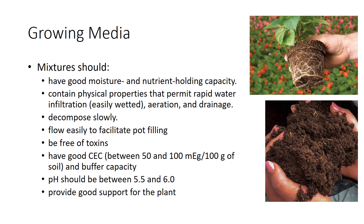In addition, growing media should provide support for the plant and have good cation exchange capacity (CEC) and a pH in the range between 5.5 and 6.0, or according to the needs of the specific plant being grown. A good growing media has both organic and inorganic components. Some key components are peat moss, wood byproducts, bark, and vermiculite, which are used because of their high moisture and nutrient holding capacity, while sand and perlite are used to promote good aeration and drainage. Selecting the proper materials for the preparation of growing media maximizes plant growth and development.